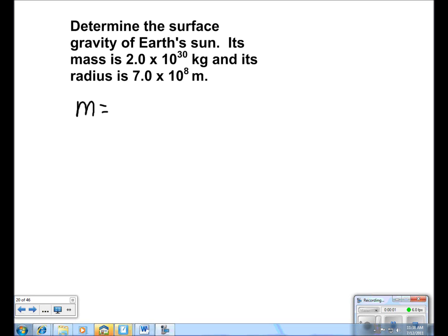We're asked to find the surface gravity of the Earth's sun. We are given that its mass is 2 times 10 to the 30th kilograms. We are also given that its radius is 7 times 10 to the 8th meters.